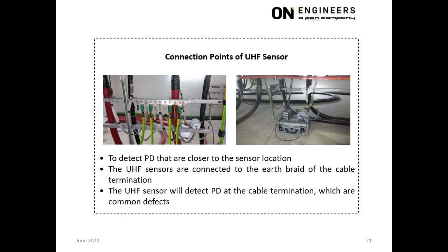This slide shows the connection of UHF PD sensors at the cable chamber of a 22 kV GIS. The UHF sensor — capacitive type in this picture — is connected to the earthbreak of the cable termination. The purpose is to detect PD at the cable termination, which is a common defect.